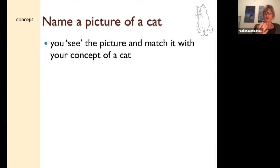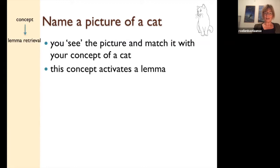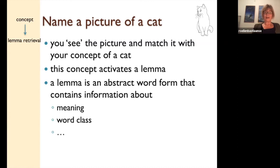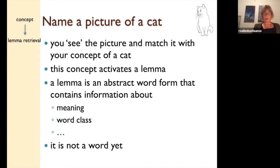When you name a picture of a cat, you need to activate the concept of a cat — we're not talking about language yet, just the concept. And that information activates the lemma of a cat. A lemma is an abstract word form. This abstract word form contains information about the meaning of the word and about the word class. It's not a word itself yet. It's just the abstract word form that underlies the word later produced. The lemma for cat in English and Dutch is more or less the same, and in English and German as well.